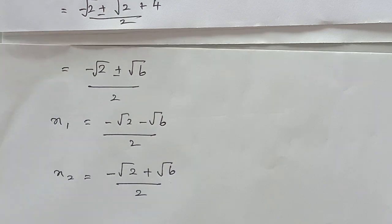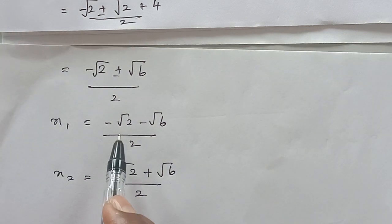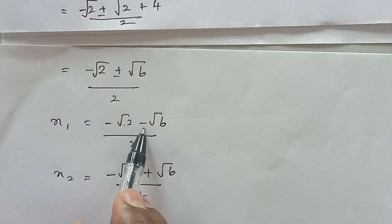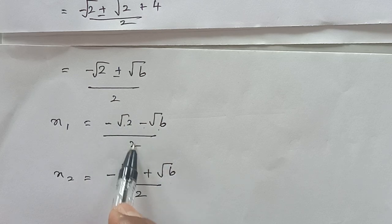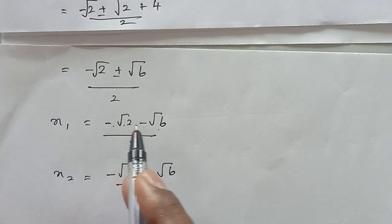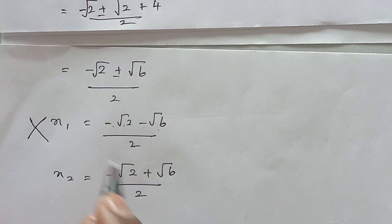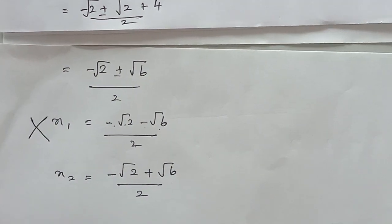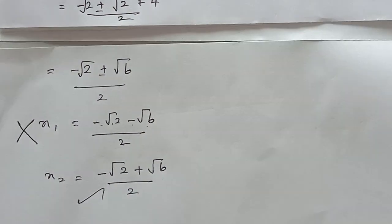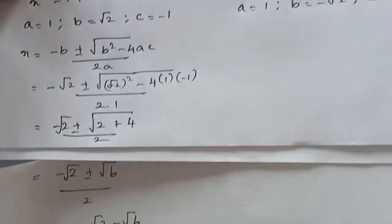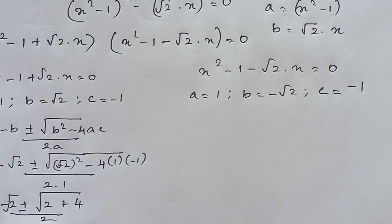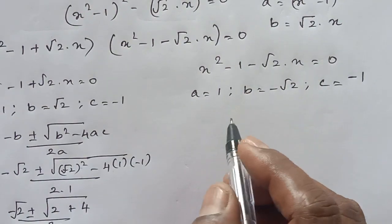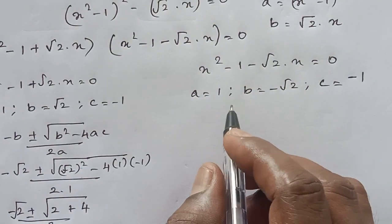We got two values. If you see x1, it is negative — minus √2 minus √6 divided by 2 — which is not possible, so x1 will not be our answer. x2 will come. Now we have one more equation to solve: x squared minus 1 minus √2 times x equals 0.